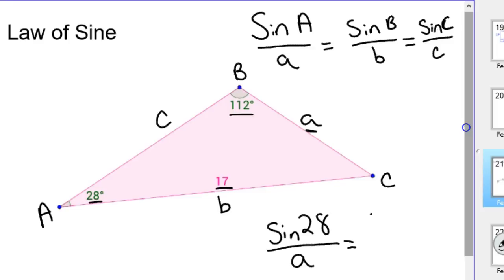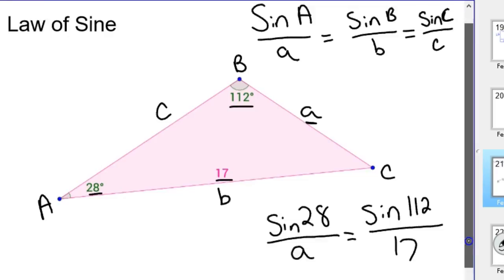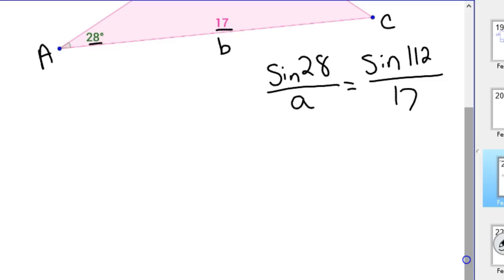Equals sine of B, which we know B is 112 degrees, over little b. And we're given those values. We don't have a, but we do have little b, which we know is 17 inches, feet, whatever.